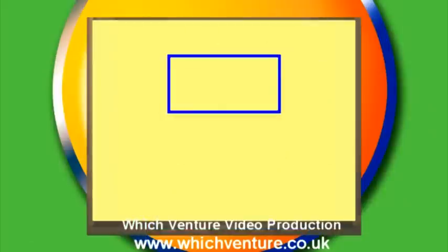Here I have a rectangle split into two parts. The length of this part is 5, and this other part is labeled x, because we don't know how long it is. The width of the rectangle is 4.